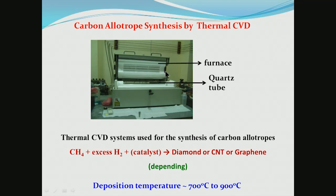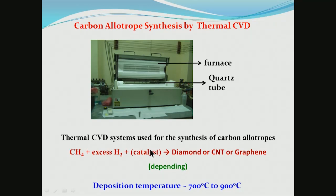This is the kind of CVD process chamber in which such depositions can be done. Carbon allotropes — diamond, graphene, and carbon nanotubes — can all be synthesized by thermal CVD. All of these require a hydrocarbon and an excess of hydrogen in the chamber, and typically a catalyst especially for carbon nanotubes and graphene, with deposition temperatures typically ranging from 700 to 900 degrees or slightly above. The same thermal CVD process is capable of giving us different allotropes of carbon.